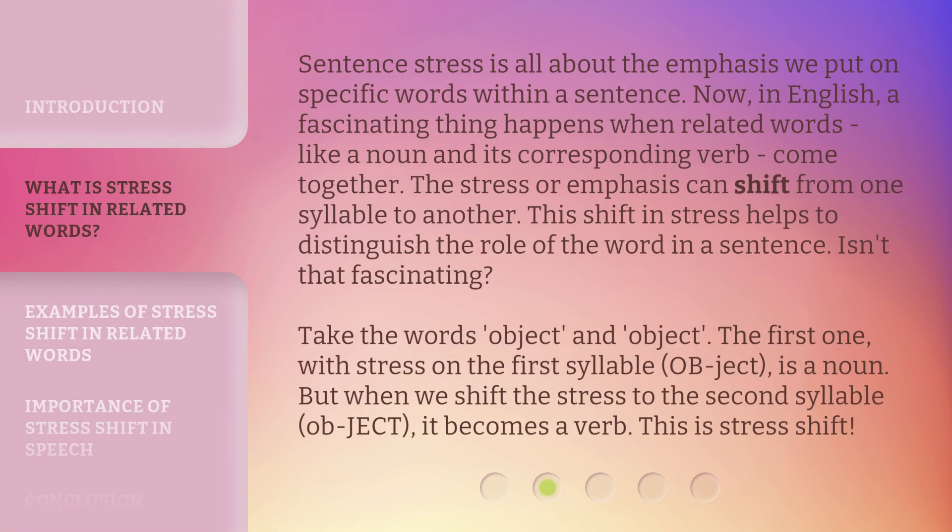Sentence stress is all about the emphasis we put on specific words within a sentence. Now, in English, a fascinating thing happens when related words, like a noun and its corresponding verb, come together. The stress or emphasis can shift from one syllable to another. This shift in stress helps to distinguish the role of the word in a sentence. Isn't that fascinating?